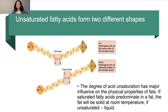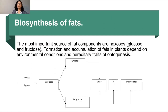Unsaturated fatty acids form two different shapes: the cis form, where hydrogens are on the same side of the double bond, and the trans form, where hydrogens are on opposite sides. The degree of acid unsaturation has a major influence on physical properties of fats. If saturated fatty acids predominate in a fat, it will be solid at room temperature; if unsaturated, it is liquid. The most important sources of fat components are hexoses, glucose and fructose. Formation and accumulation of fats in plants depend on environmental conditions and hereditary traits.